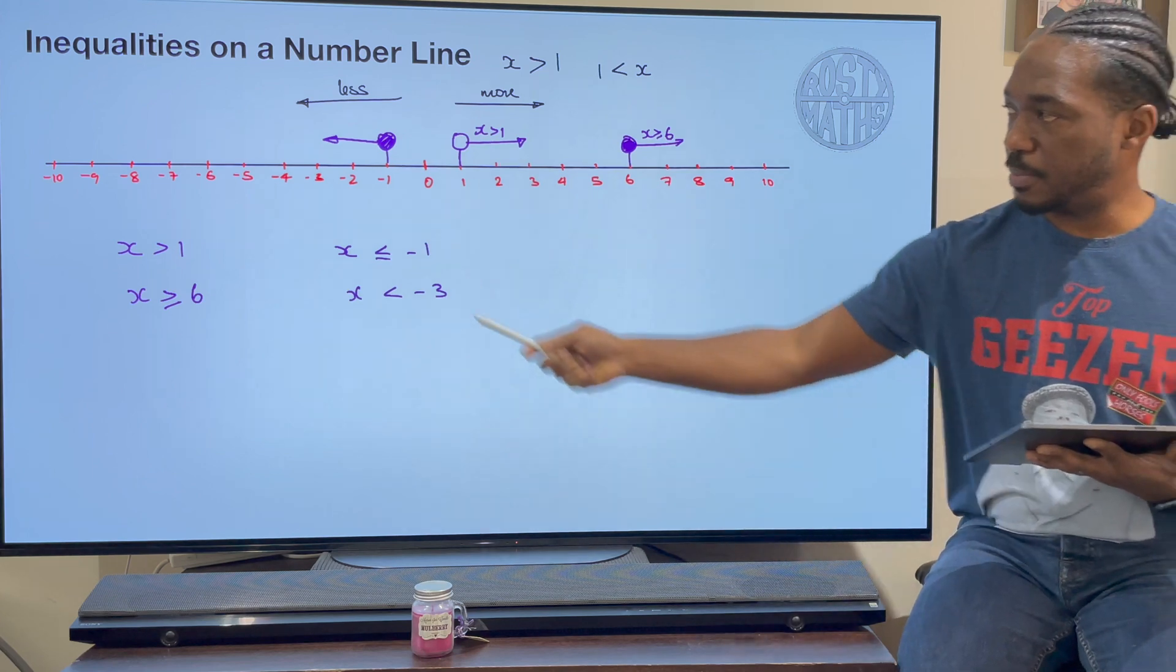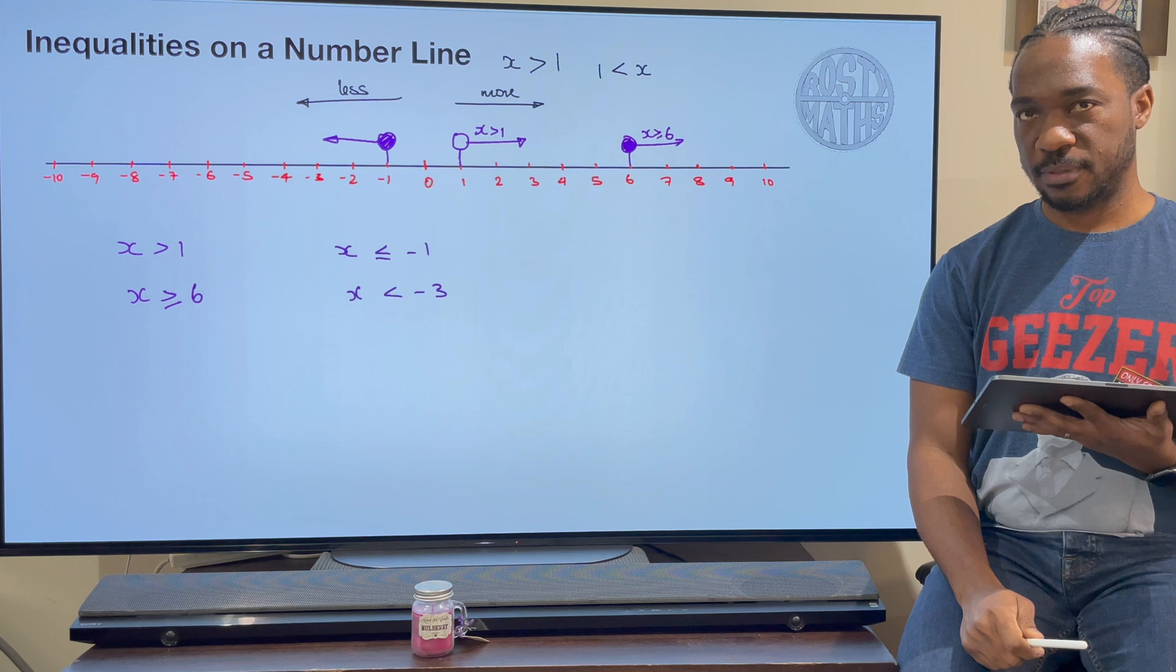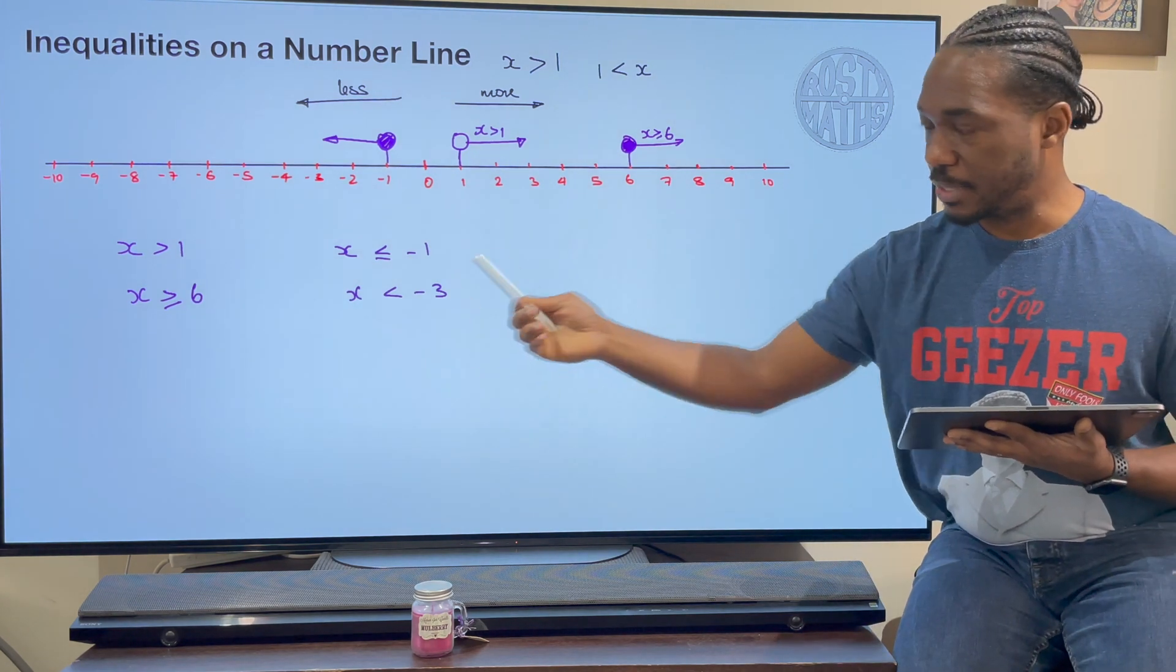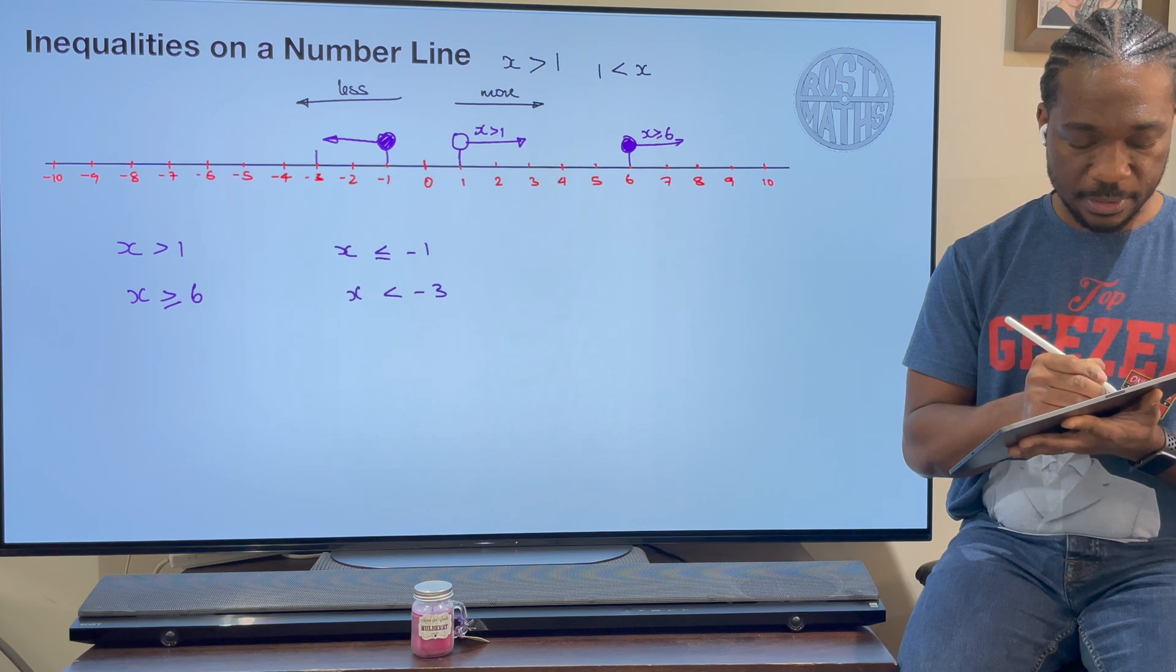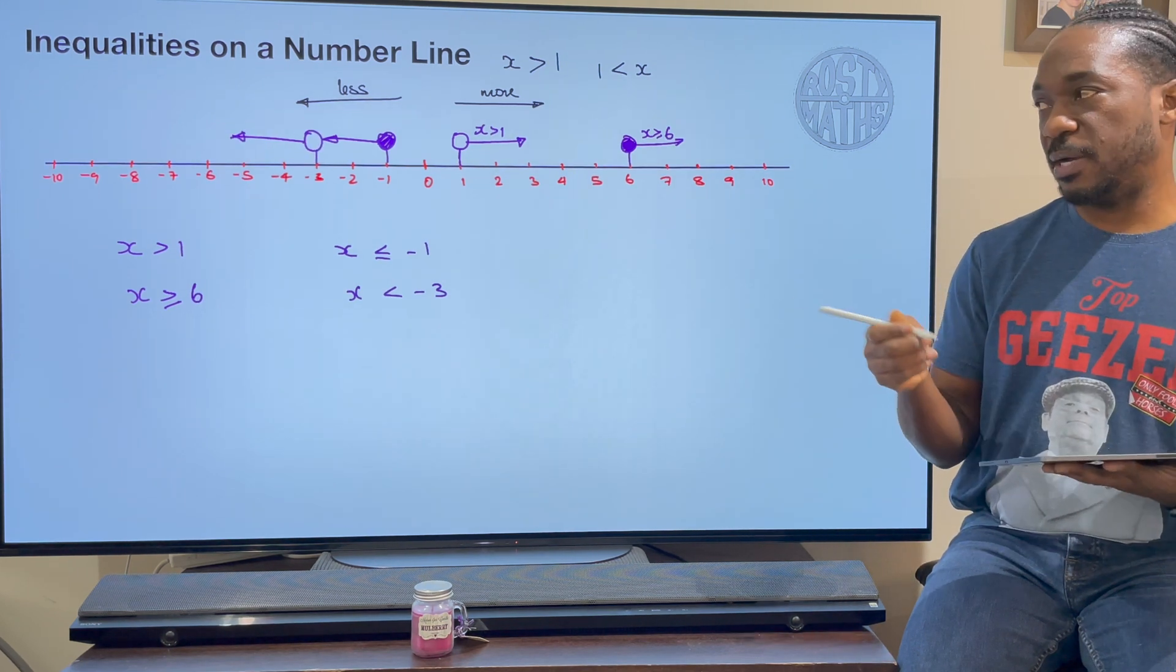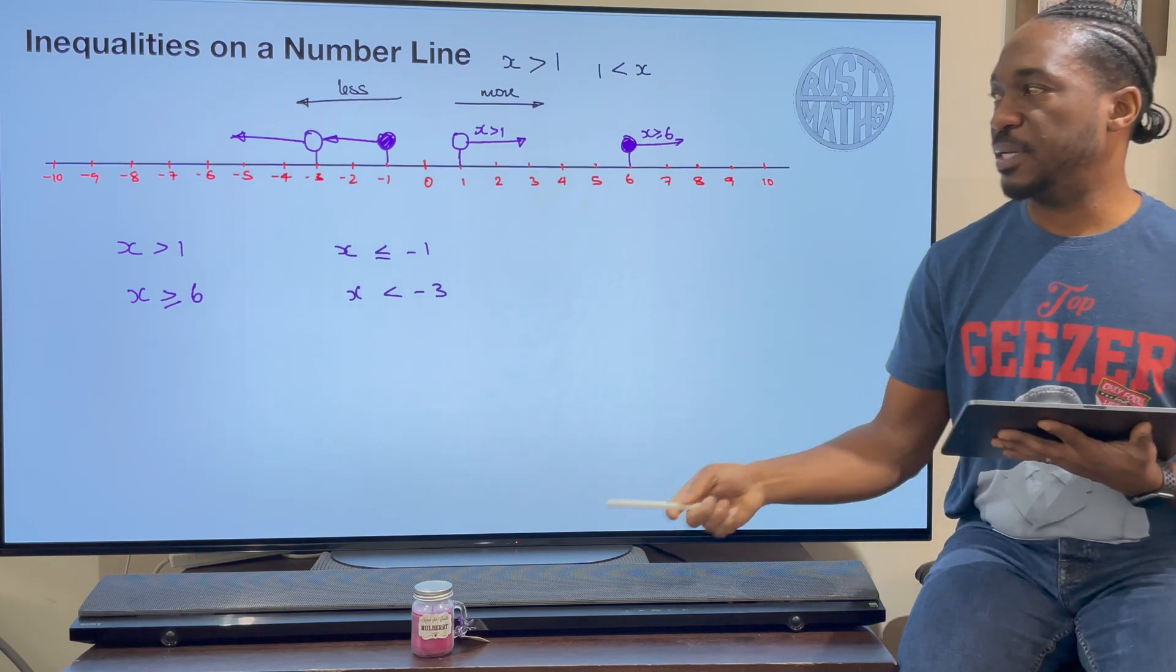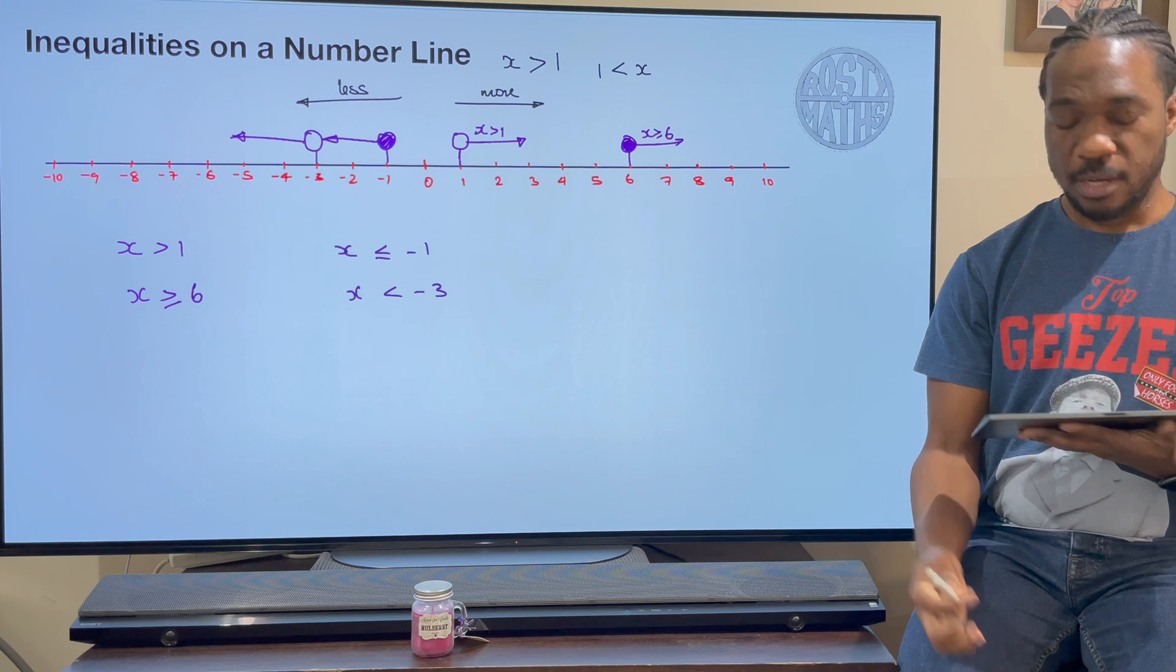Less than, x is less than or equal to negative 1. So I go to negative 1, draw my circle, and because it's less than I'm going to go to the left this time. I will color it in. Reason why I will color it in is because it's also equal to. So it's less than or equal to. And then down here, less than negative 3. So I'm going to go there, draw my circle, and then go to the left again. But this time I will not color it in because it is not equal to.